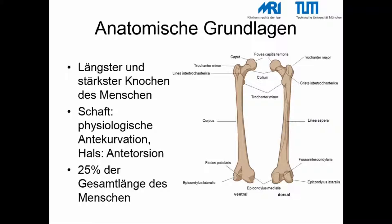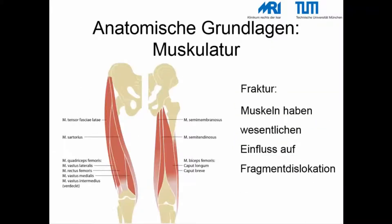Der Femur ist der längste und stärkste Knochen des Menschen. Der Schaft hat eine physiologische Antikurvation und der Hals eine Antitorsion. 25% der Gesamtlänge des Menschen wird durch den Oberschenkel definiert. Aufgrund der zentralen Position des Oberschenkelknochens setzen eine ganze Reihe von Muskeln am Oberschenkel an bzw. haben ihren Ursprung vom Oberschenkelknochen.